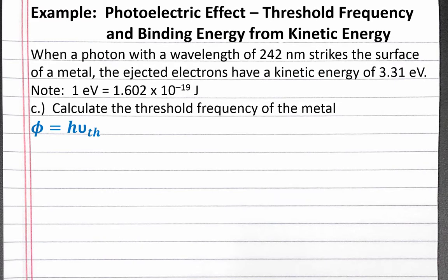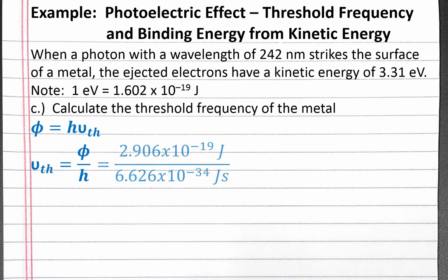In Part C, we're calculating the threshold frequency from the binding energy. Rearranging our equation to solve for threshold frequency, we get binding energy divided by Planck's constant. For this equation, we need to use the binding energy in joules for one electron, not kilojoules per mole. Substituting in the binding energy and Planck's constant, we get 4.39 times 10 to the 14th. The units are 1 divided by seconds, which are also Hertz.